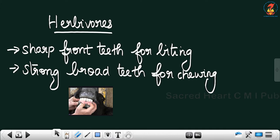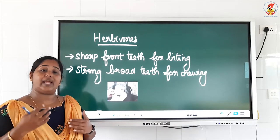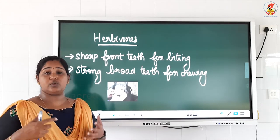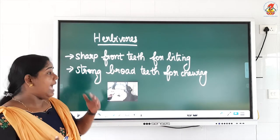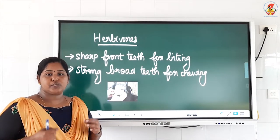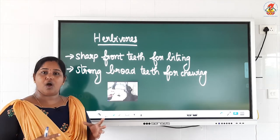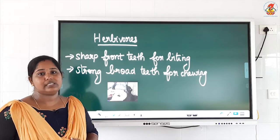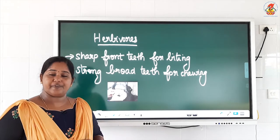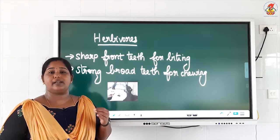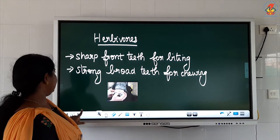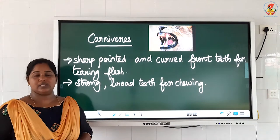The cow has sharp front teeth to bite the leaves, because at one cut it needs to get the leaf into its mouth. It also has strong broad grinding teeth for chewing — the leaves must be chewed. So herbivores, which are plant eaters, have sharp front teeth to bite the food item and strong grinding teeth to chew the food item.